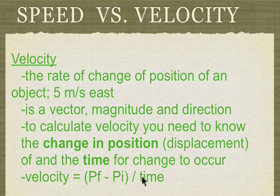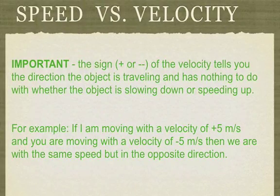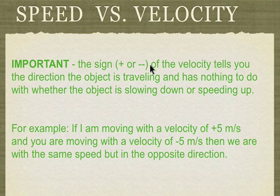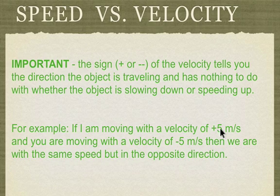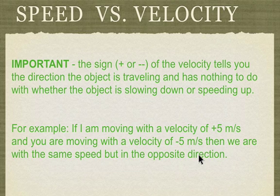One quick point that's going to come up a lot in class: the sign of the velocity tells you the direction that you're going — that's all. It has nothing to do with whether you're speeding up or slowing down. A lot of people think negative velocity means you're slowing down, but if my velocity is negative 10 meters per second or negative 75 miles per hour, that does not mean I'm slowing down — it just means I'm going in the negative direction. If I'm moving with a positive 5 velocity and you're moving with negative 5, our speeds are the same but our directions are opposite.